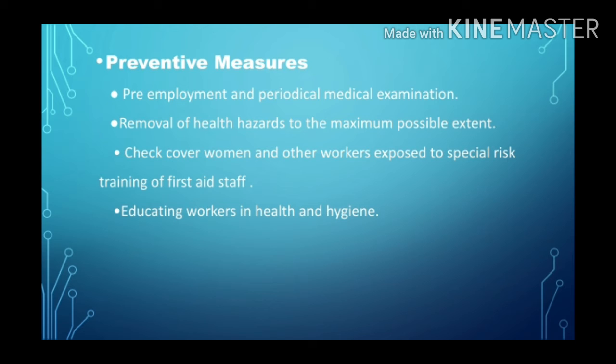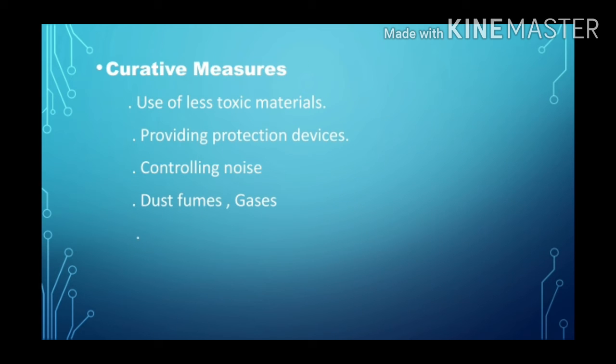To summarize the preventive measures: periodical medical examination, removal of health hazards to the maximum possible extent, check over women and other workers exposed to special risk, training of first aid staff, and educating workers in health and hygiene. These are the preventive measures. Next is the curative measures — the curative measure consists of treatment for the affected workers.